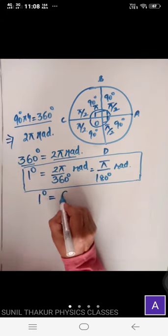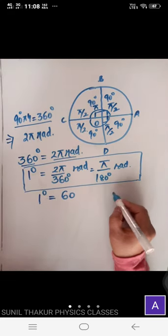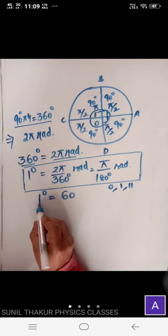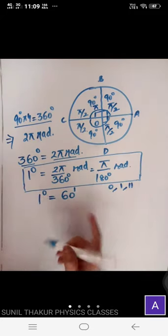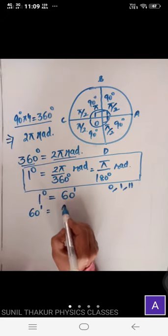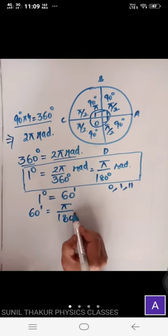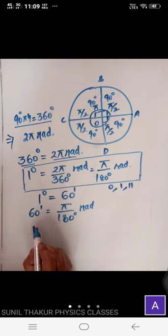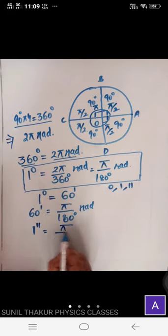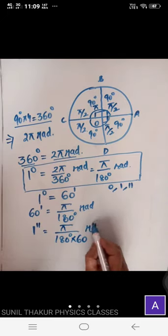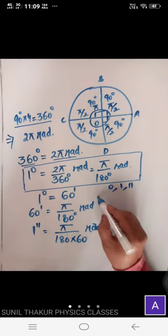Now, 1 degree is equal to 60 minutes. So if 1 degree equals π/180 radians, and 1 degree equals 60 minutes, then 60 minutes equals π/180 radians. Therefore, 1 minute equals π divided by (180 × 60) radians.